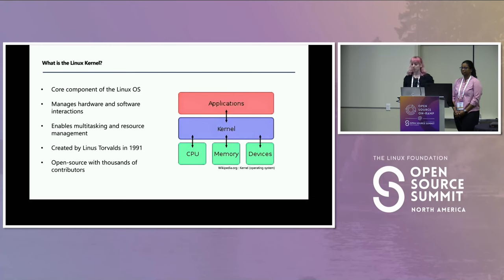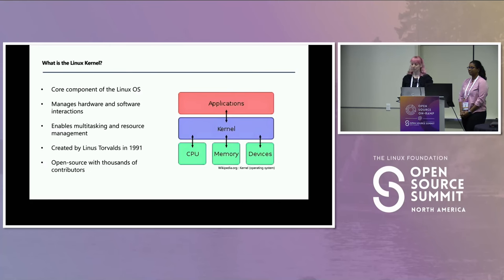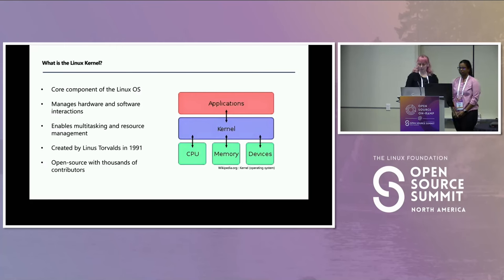The Linux kernel was created by Linus Torvalds back in 1991. It has been growing a lot ever since then, now with thousands of contributors around the world. Lots of companies have Linux kernel teams. We all get to contribute towards what's called the upstream kernel. A lot of companies will also have their own customized kernels, but it all is based on what we refer to as the upstream — what everybody collaborates toward, and then we bring it down and customize from there.